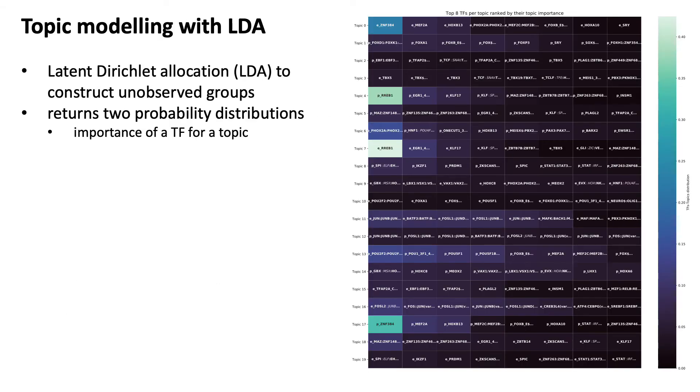And this count matrix can be used in topic modeling, and we use latent Dirichlet allocation. This then constructs unobserved groups with so-called topics which try to explain similarities in the data, so similarities in the transcription factor binding sites in the interactions. And it returns two probability distributions.